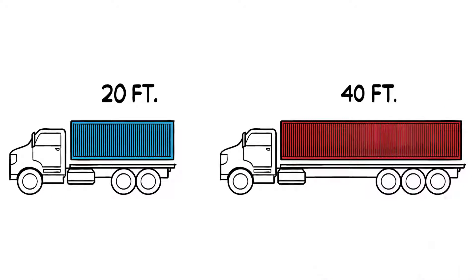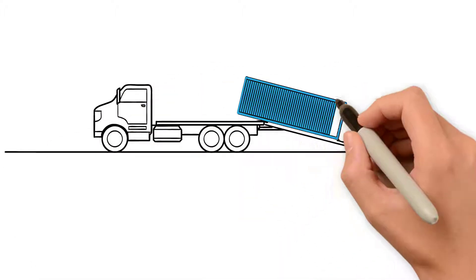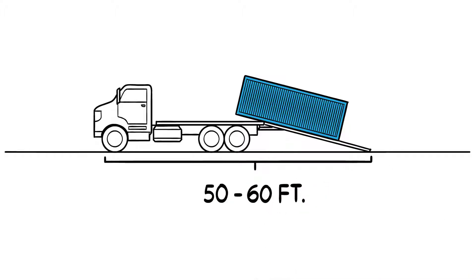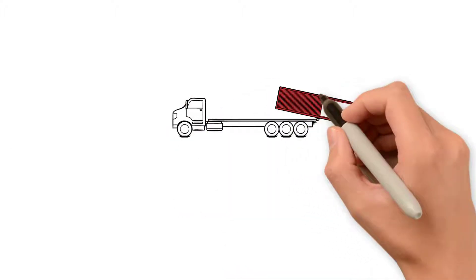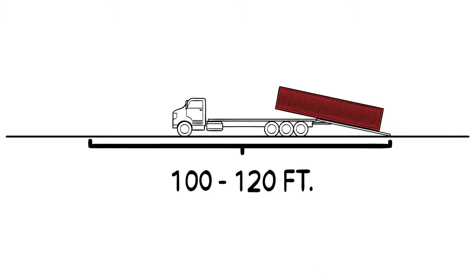20-foot and 40-foot containers will often be delivered on different size variations of these trucks. A 20-foot container is delivered on a smaller tilt-bed truck, similar to a tow truck. It requires about 50-60 feet of straight-line distance to offload the trailer. 40-foot containers arrive on a truck and trailer. This configuration requires 100-120 feet of straight-line clearance.